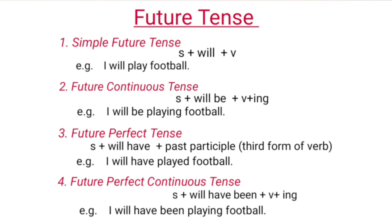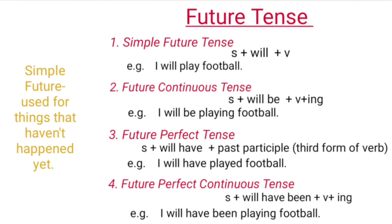Next is future tense. Its four types are: Simple future tense, Future continuous tense, Future perfect tense, and Future perfect continuous tense. Simple future tense is used for the things that haven't happened yet. It is formed of Subject plus 'will' plus verb. And example is 'I will play football.'